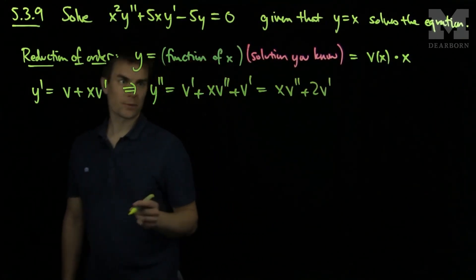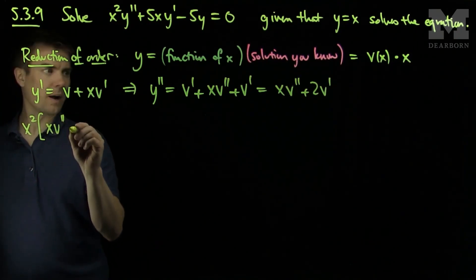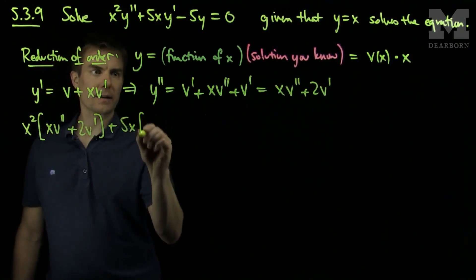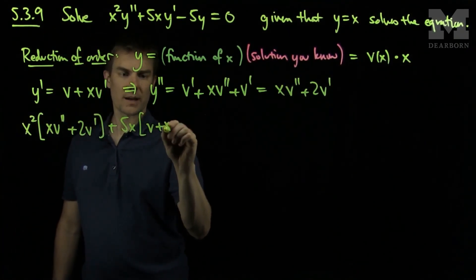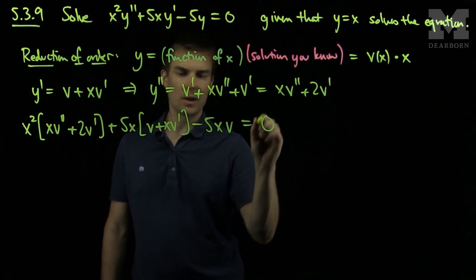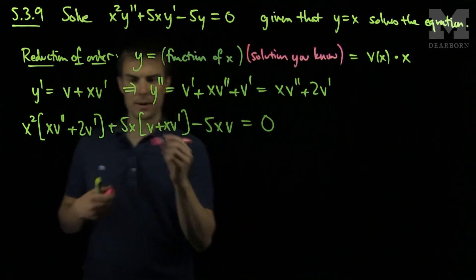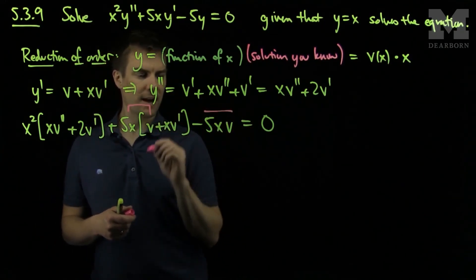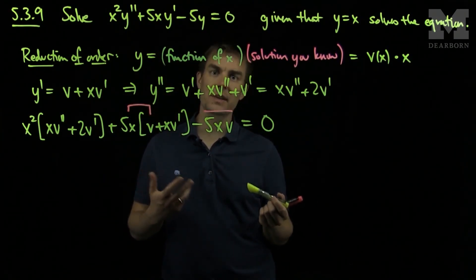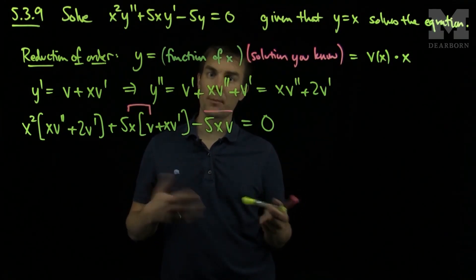We'll plug this back into our original equation. So we have x squared times (x v double prime plus 2 v prime) plus 5x times (v plus x v prime) minus 5 times x v equals zero. Notice that there is a 5xv here and a negative 5xv, so those terms cancel out. The reduction of order method tells us that the terms involving only v, not v prime or v double prime, should always cancel out — that's a check that we're doing the problem correctly.